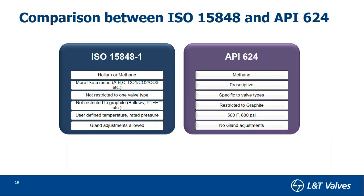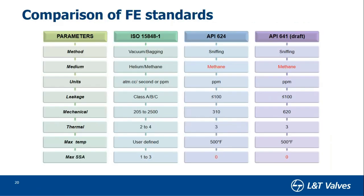In a gland packing, the gland nut is very important — it provides the loading or packing pressure that creates the seal. If the gland load is loosened, the media will start leaking. One way of arresting leakage is to tighten the gland nut — that is called gland adjustment. API uses methane gas; you measure the concentration of methane mixing in air — this is the PPM sniffing method. ISO measures both PPM and leakage rate using different specialized equipment for each standard.